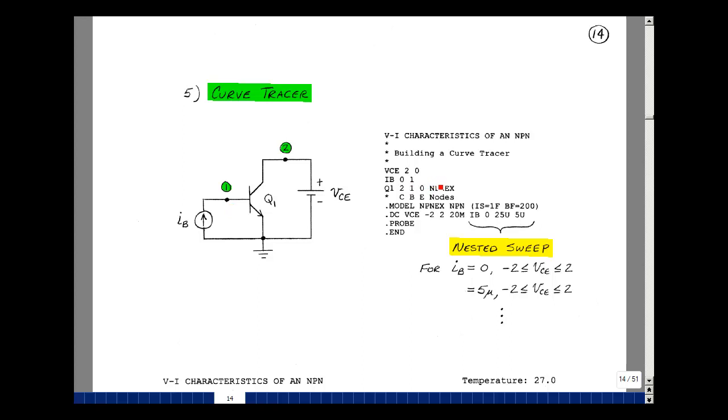Default is zero, but I'm going to be varying that shortly. My transistor is between the collector base and emitter, and my model name is NPN example. This is what was used in our textbook. The dot model, model name, NPN transistor. Let's use an I sub s equal to one femto amp and beta f equal to 200.